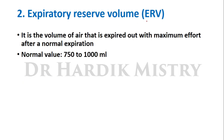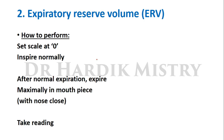Now expiratory reserve volume, or ERV. It is the volume of air that is expired out with maximum effort after normal expiration. Normal value is 750 to 1000 ml. To measure it: set the scale at zero, inspire normally, then after normal expiration, expire maximally into the mouthpiece with nose closed, and take the reading.